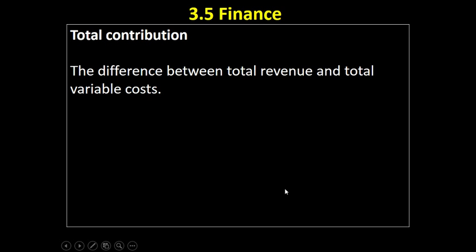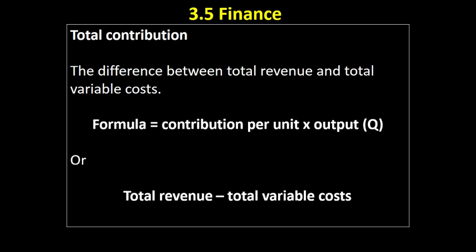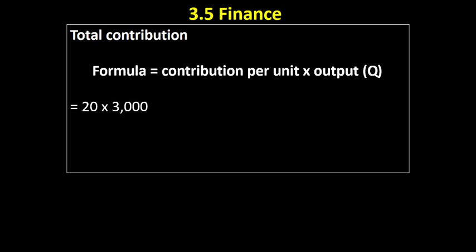Let's look at a firm expecting to sell 3,000 cricket bats and calculate total contribution, which is the difference between total revenue and total variable costs. We can calculate it two ways: contribution per unit (£20) times output (3,000), or total revenue minus total variable costs. Both give us £60,000 total contribution from selling all 3,000 cricket bats.